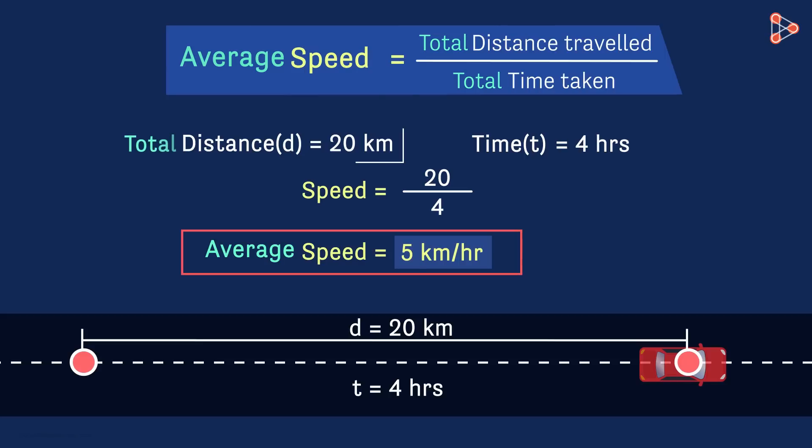So in our example, we are given a total distance that the car travels, and the total time taken by it to cover that distance. And hence we calculated the average speed of the car for the entire journey.